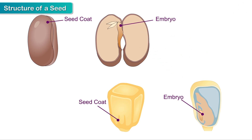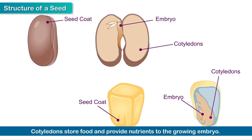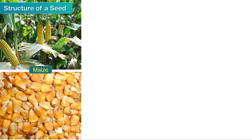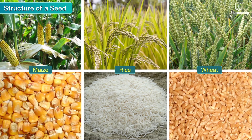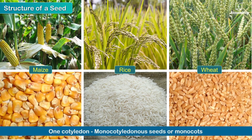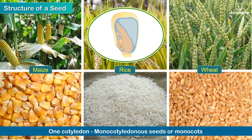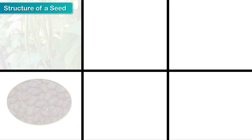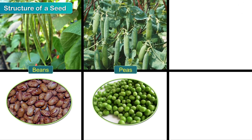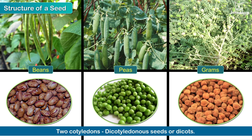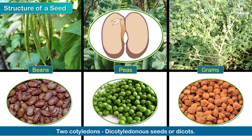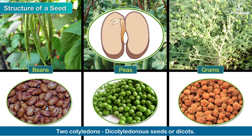There are two seed leaves or cotyledons. They store food and provide nutrients to the growing embryo. Some seeds like maize, rice, wheat have one cotyledon and are called monocotyledonous seeds or monocots. Seeds of beans, peas and other plants have two cotyledons and are called dicotyledonous seeds or dicots.